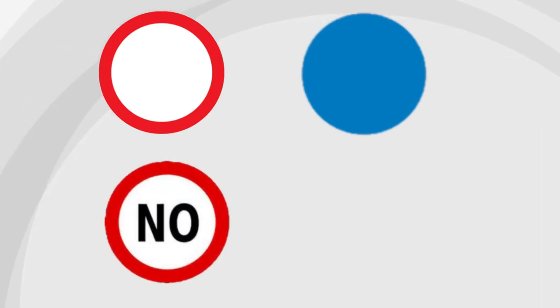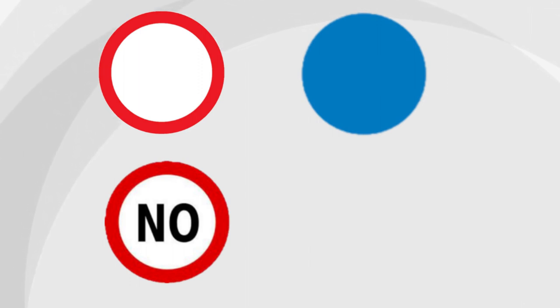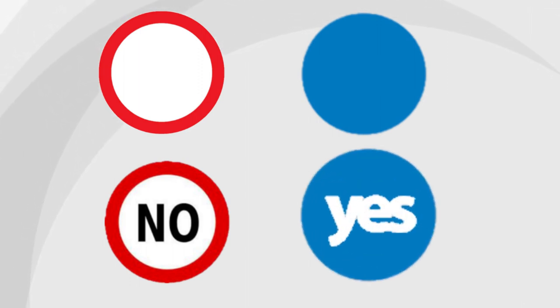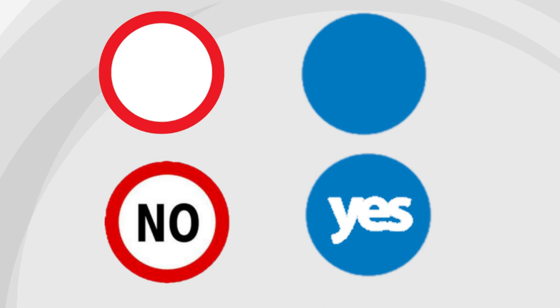Circular signs give an order. Anything in a red circular sign means no — something that we must not do. It's a negative order. Whereas anything in a blue circle is a positive order, something we can do, something we should do. Red triangular signs are warning signs, something that we should be aware of — an approaching hazard.